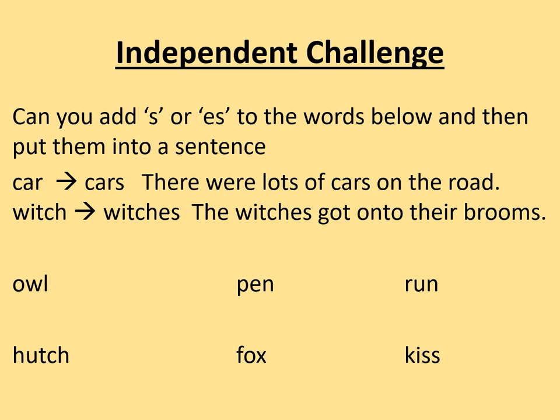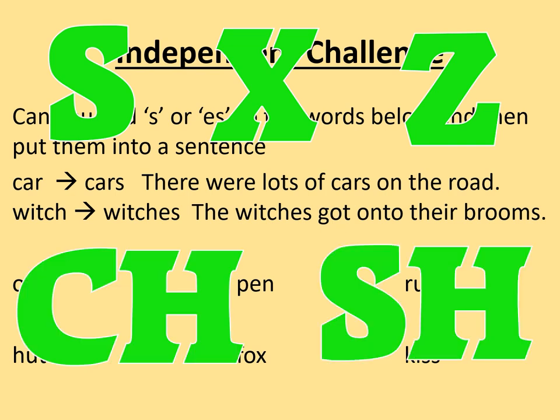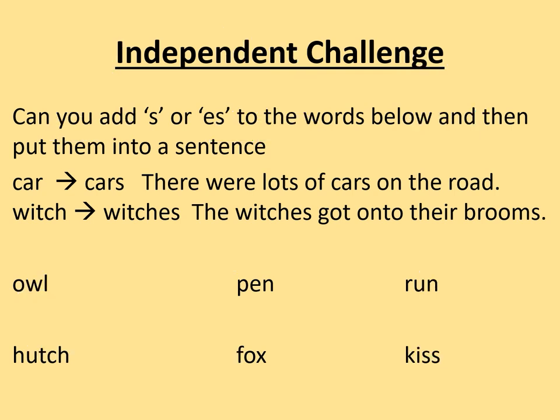Remember, if the word ends in s, x, z, ch, or sh, we add es. And you can almost hear it — it sounds like iz at the end of a word, but we don't write is, we write es. So we've got the words owl, pen, run, hutch, fox, and kiss. See if you can change those words by adding s or es.